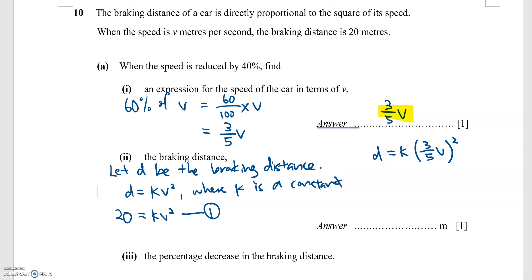Simplifying this expression, I will get 9 over 25 kv squared. And from equation 1, I know that kv squared is actually equals to 20.